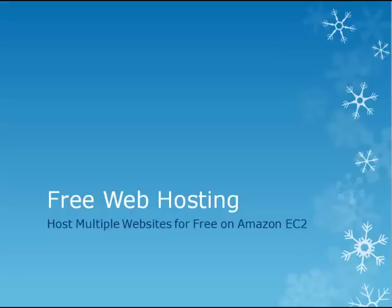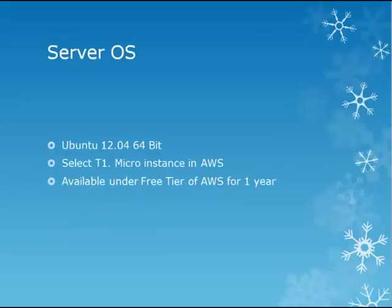In this video, I explain how to host multiple WordPress websites on Amazon Web Services EC2 for free of cost. We just need one T1 Micro instance of Amazon EC2. You can create an Ubuntu 12.04 instance and use it under the free tier of Amazon Web Services free of cost for one year.